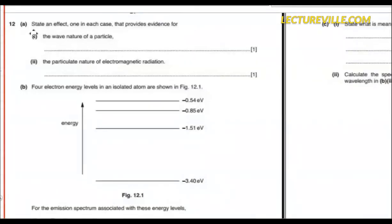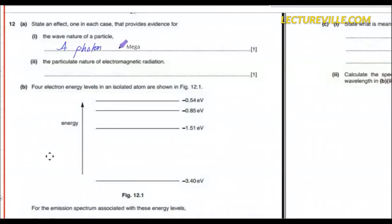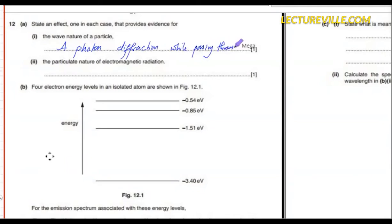In this question, an examiner says: state and explain one example in each case that provides evidence of the wave nature of a particle. A photon diffracting while passing through a slit — though saying a photon will actually be incorrect — is one example of diffraction as evidence of wave nature.